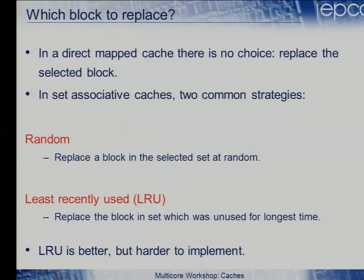Which block do you replace? You want to load data from memory, find it's not already cached, and must evict something. One option is to replace a block at random. Or you would like to replace the least recently used — the one you haven't used for the most cycles. LRU is clearly better but harder to implement. LRU would be great because the cache would automatically flush out data that wasn't heavily used.